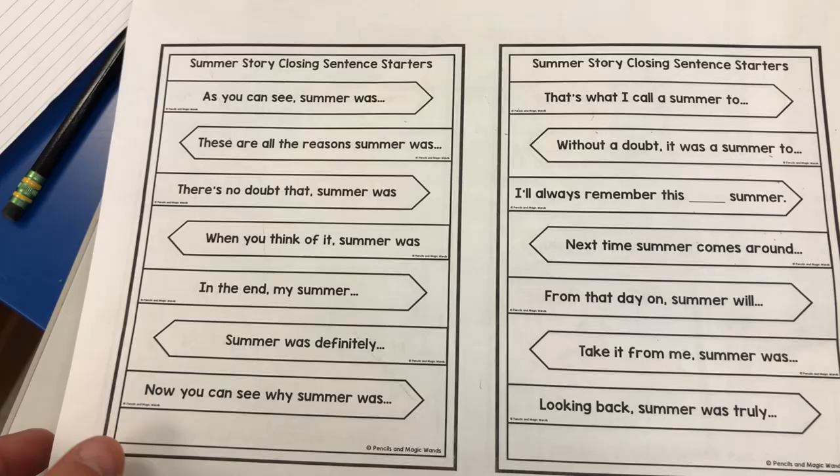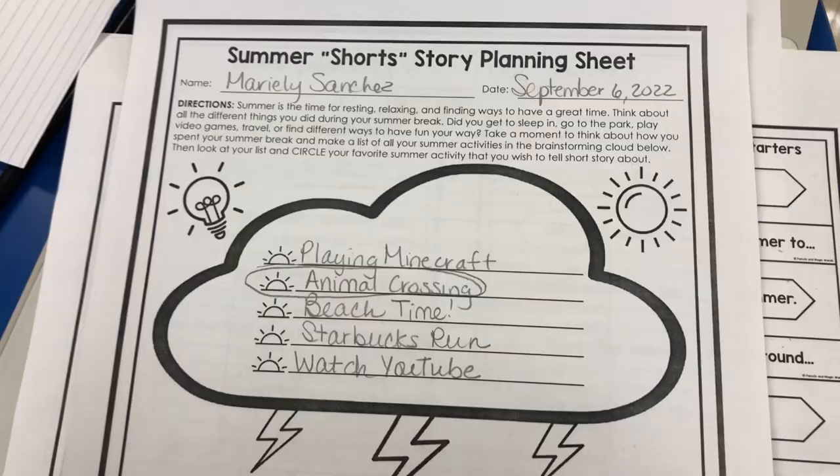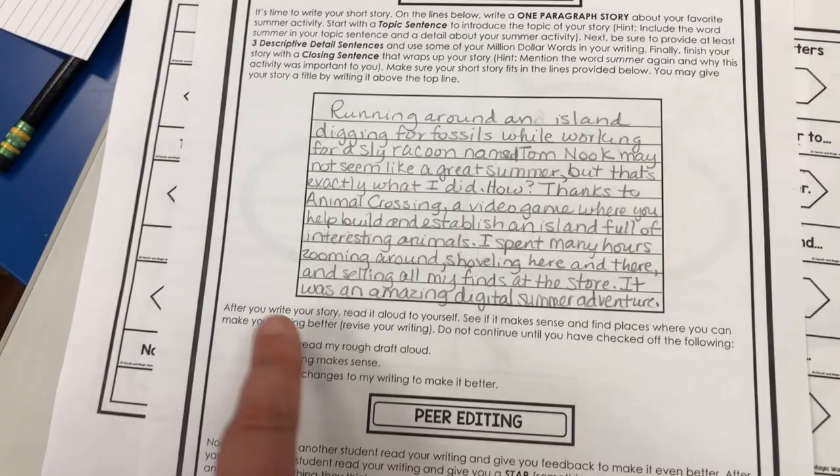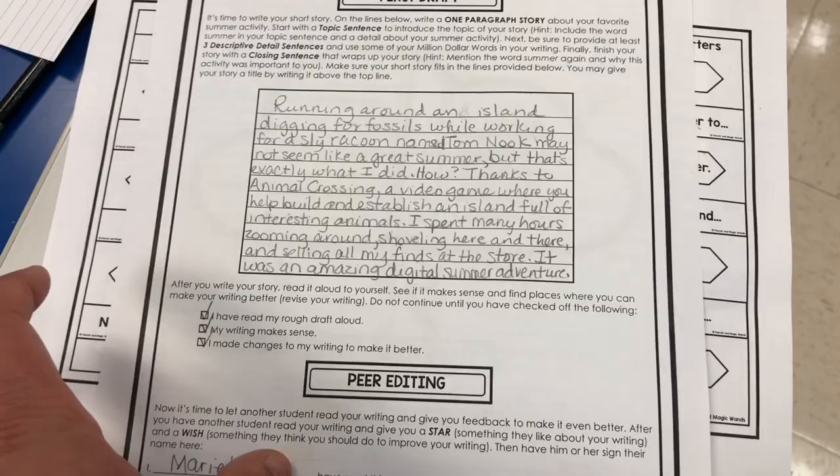On the back they had closing sentence starters so they had an idea on how to end their story. This was the planning sheet I completed with my afternoon class — I decided to write about Animal Crossing, collected some words for that, wrote my short story on the back, and conducted all of those steps. I'll do the final copy tomorrow since my afternoon class, block one, starts with me tomorrow. I still have one student that needs to finish, so she'll just finish tomorrow from my block two class.